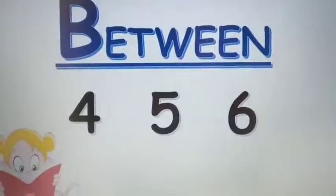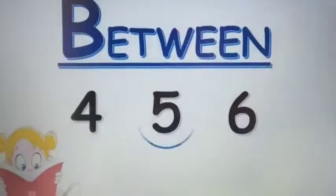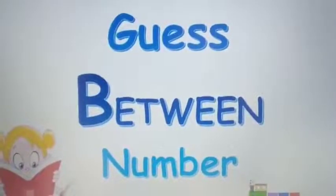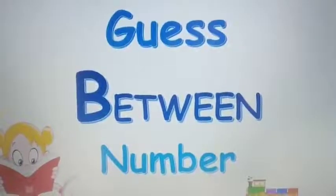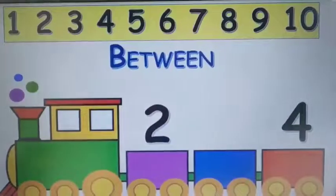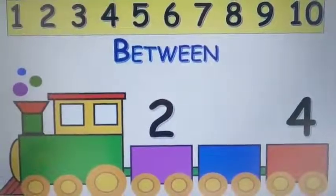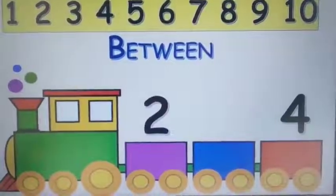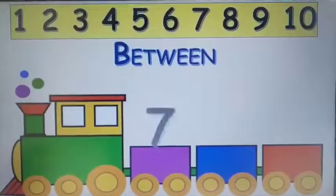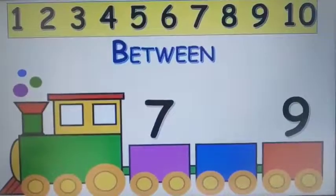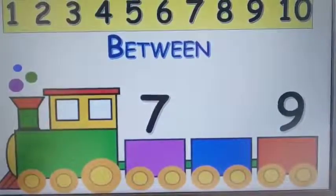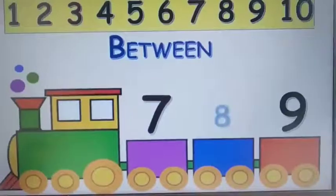So this is the next concept — between. Between ka matlab kya tha? Beech mein. Which number is between four and six? Five — four aur six ke beech mein five hai. Now you can see the number line. Guess the number that comes between two and four — three, very good, three comes between two and four. Now guess the number between seven and nine — eight, so eight comes between seven and nine.